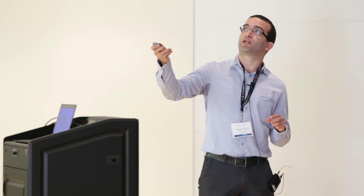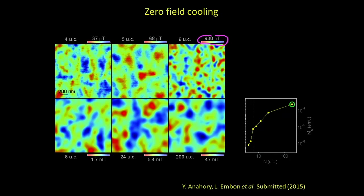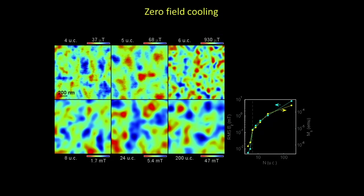As you add more and more layers, the structure changes a bit but nothing too dramatic, and the strength of the signal grows with the number of layers. You can plot the RMS signal measured here, and it follows the saturation magnetization on the same scale quite well.